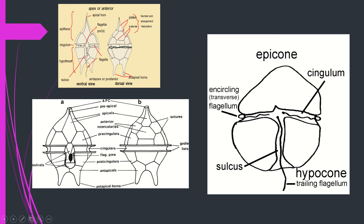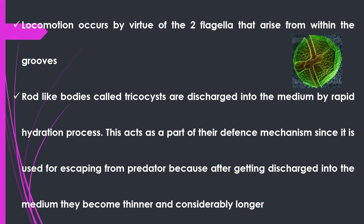Next we come to the dorsal view. In the dorsal view we see antapical horns marked in the posterior region. In the anterior part we see plates and sutures. The number of plates and their mode of arrangement is known as tabulation. Locomotion occurs by virtue of two flagella that arise from within the grooves.